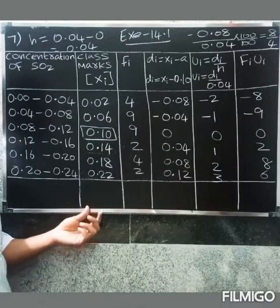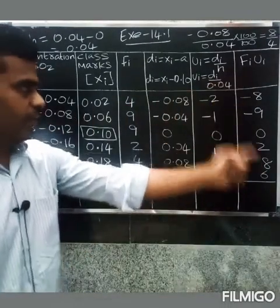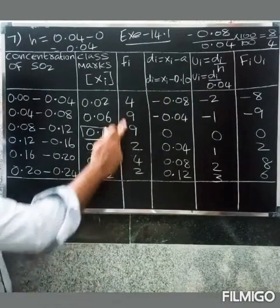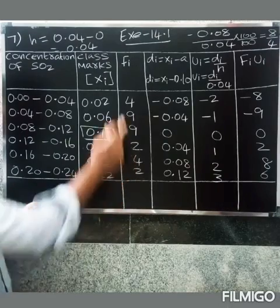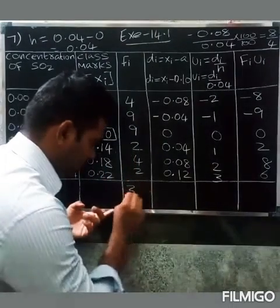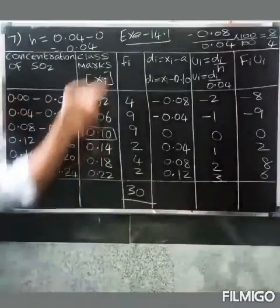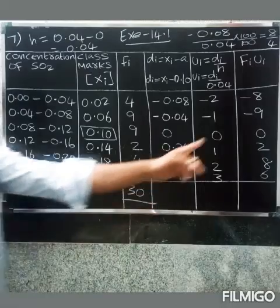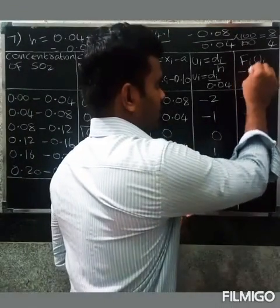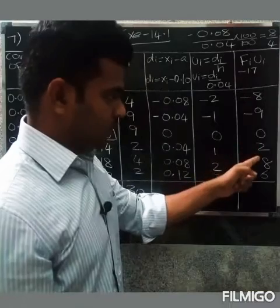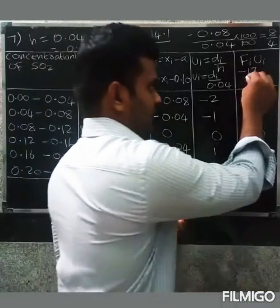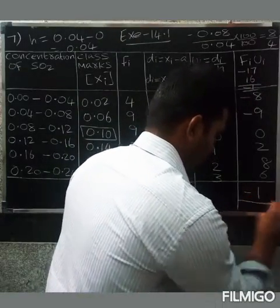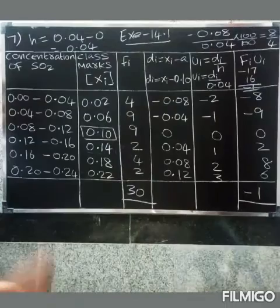The step deviation mean formula is: Mean = A + (Σfᵢuᵢ / Σfᵢ) × h. The summation Σfᵢ = 4 + 9 + 9 + 2 + 4 + 3 = 31. Wait — Σfᵢ = 30. The Σfᵢuᵢ: adding minus 8, minus 9, 0, 2, 8, 6 gives a sum. Minus 17 plus 2 plus 8 plus 6... Σfᵢuᵢ = minus 1.